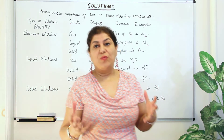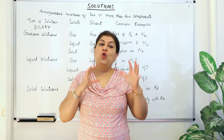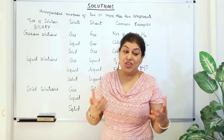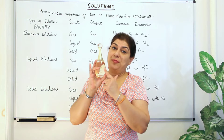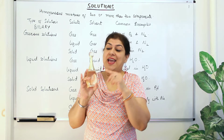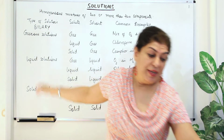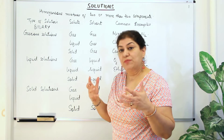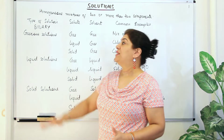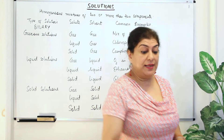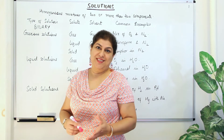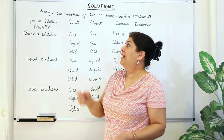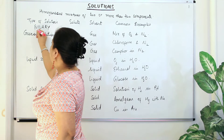So why are we discussing different kinds of mixtures? Because homogeneous mixtures are known as solutions, and this chapter is about solutions. A solution is a homogeneous mixture of two or more components. In this chapter, we will only be studying binary solutions — solutions that have only two components: one solute and one solvent.